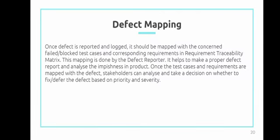Next is defect mapping. Once a defect is reported and logged, it will be mapped with the concerned test case, trace cases, and corresponding requirements in the Requirement Traceability Matrix. This mapping is done by the defect reporter. It helps to make a proper defect report and analyze the emptiness in the product. Once the test cases and requirements are mapped with the defect, stakeholders can analyze and take decisions on whether to fix the defect based on priority and severity.